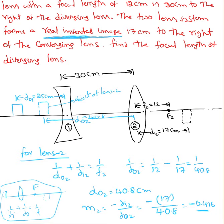For lens 2, I know distance of object 2 – actually I don't know this. I need to find the distance of object 2, but I know the image distance and I know f2.